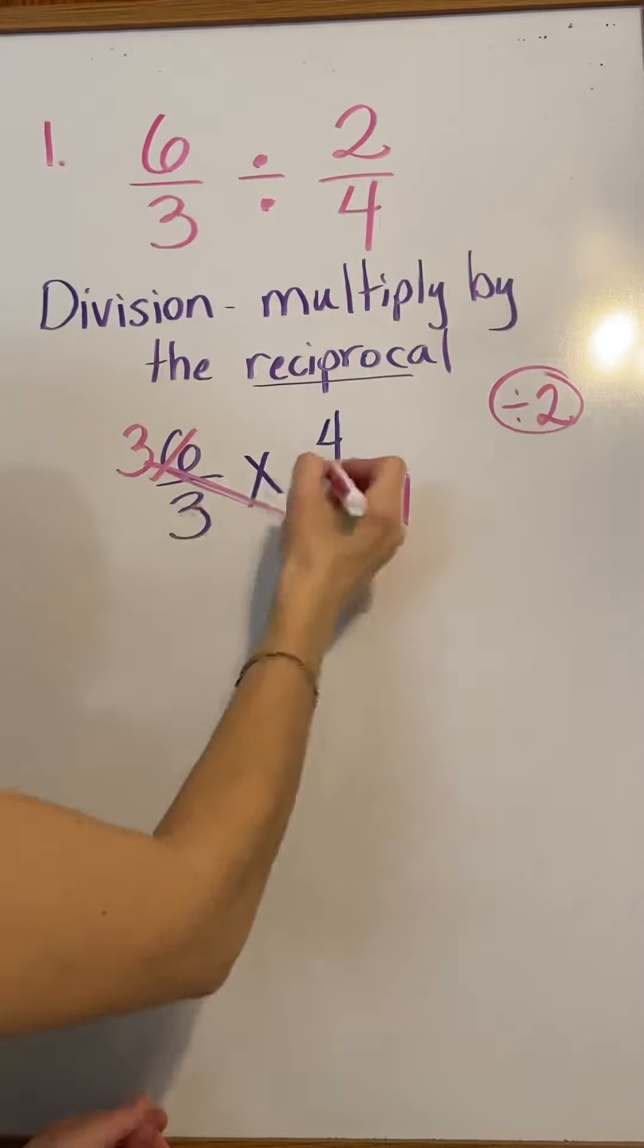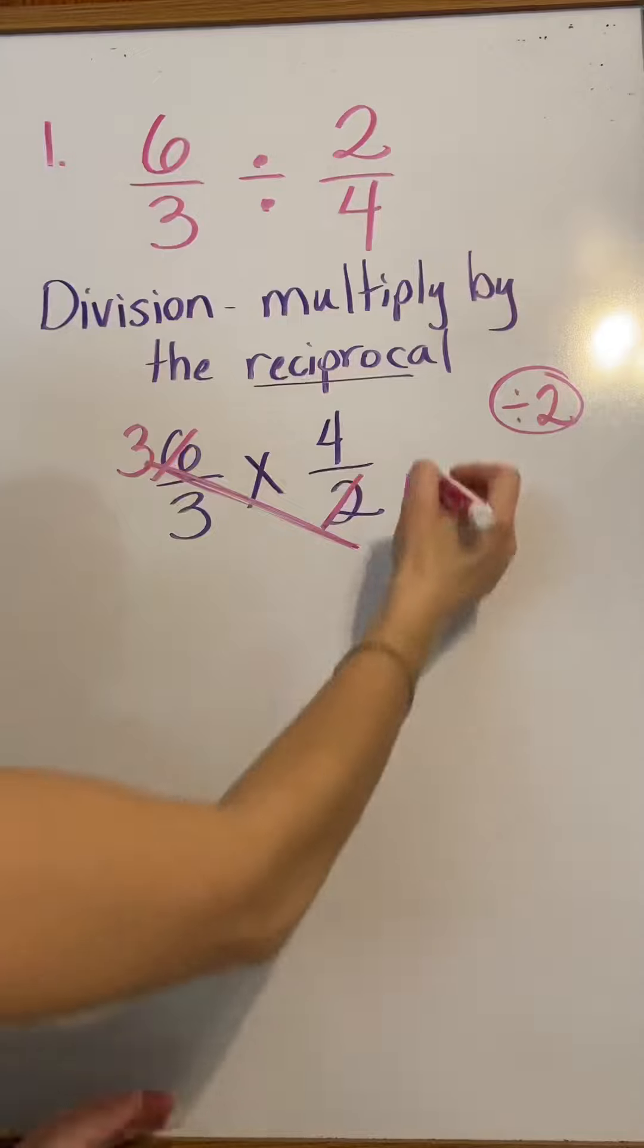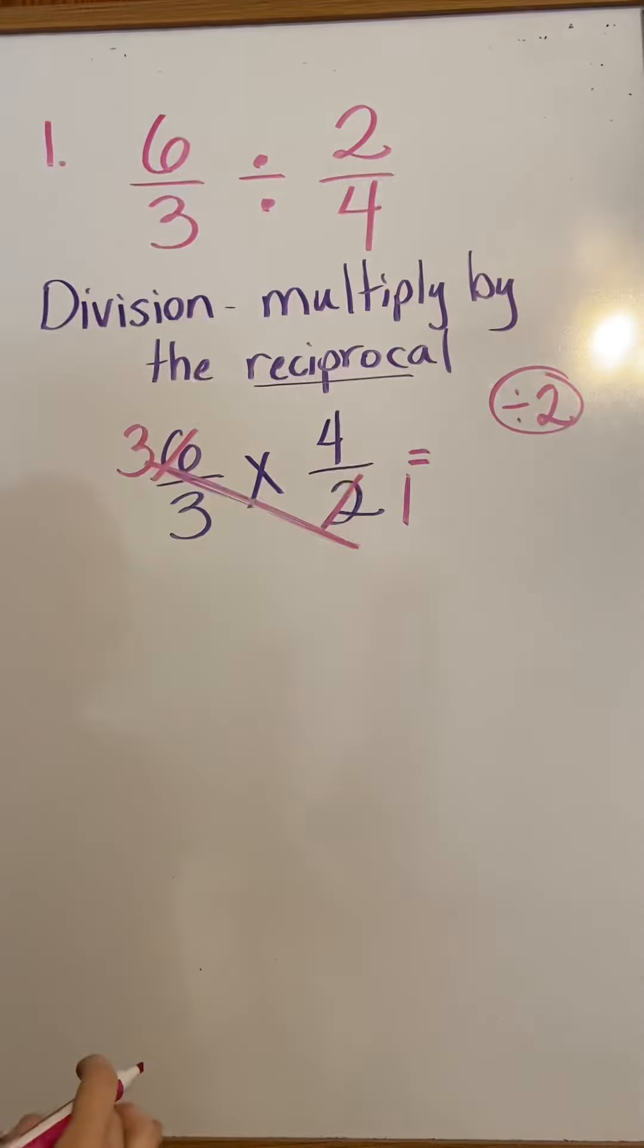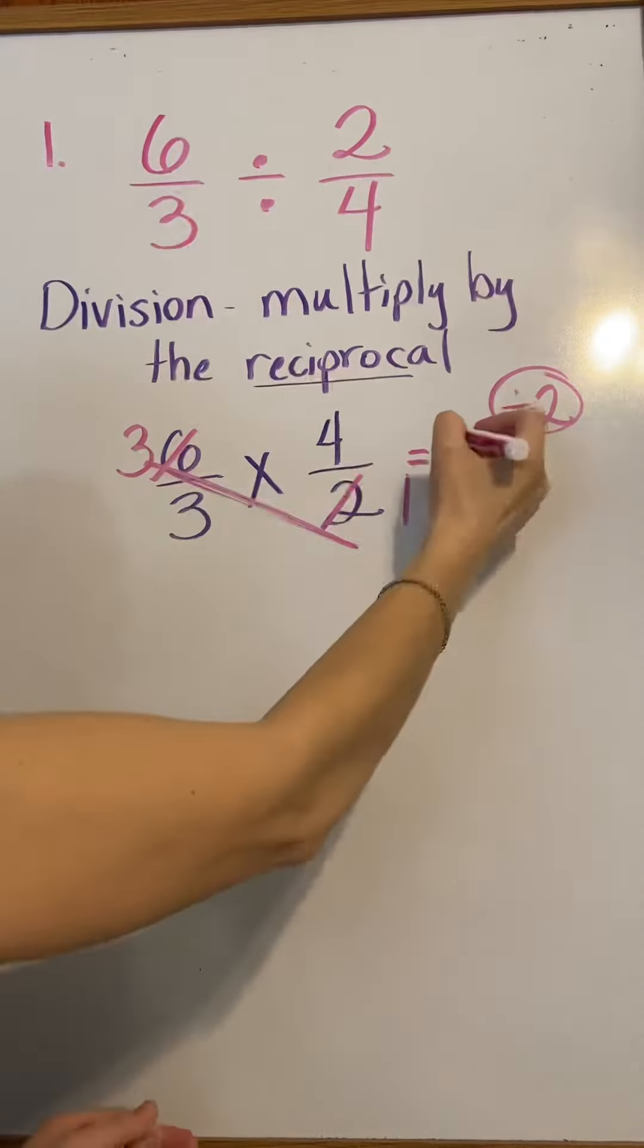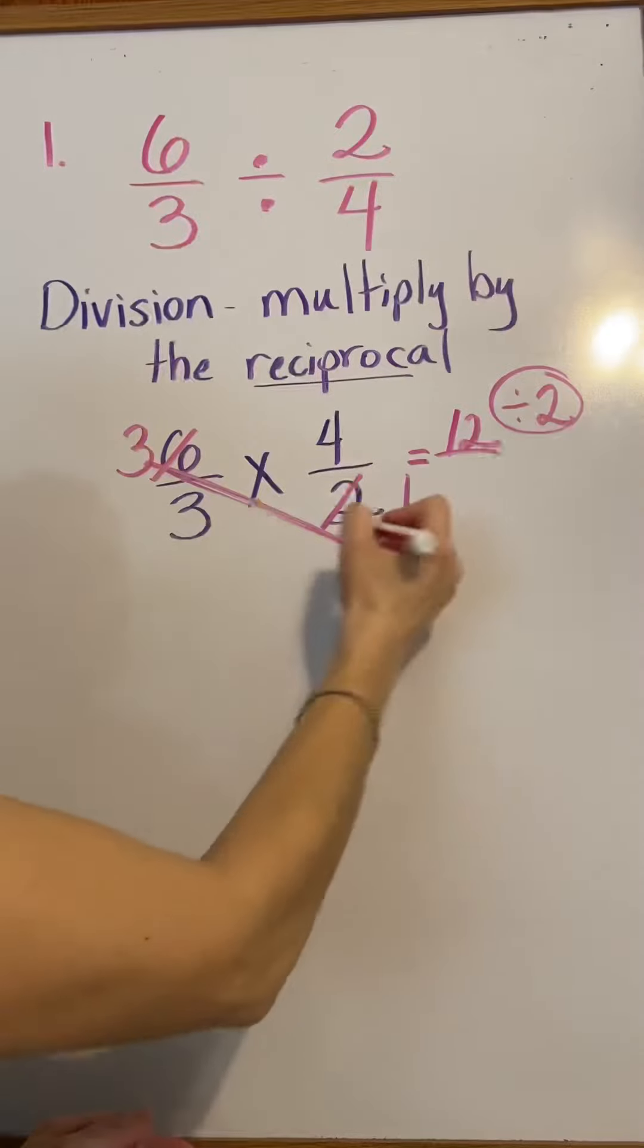Now, 4 and 3 do not have any common factors, so I'm going to leave that the same. 4 times 3 is 12, 3 times 1 is 3.